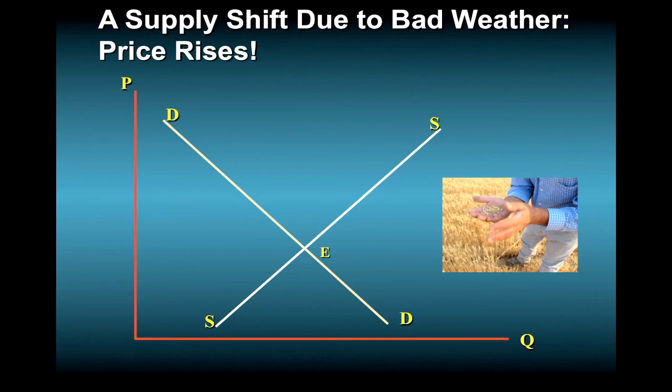Since wheat is a key ingredient of bread, this will shift the supply curve for bread to the left. This is illustrated in this figure, where the bread supply curve has shifted from S-S to S'-S'. Note, however, that the demand curve has not shifted. This is because people have the same desire for their daily sandwich, whether the harvest is good or bad.